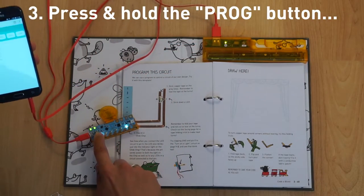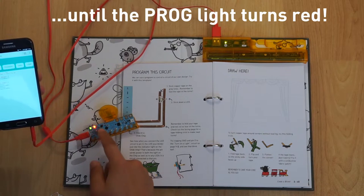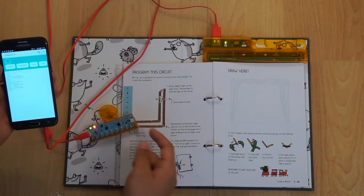When you're ready to upload, press and hold the button on your Chibi Chip until the LED stays red. That means it's listening for new code!